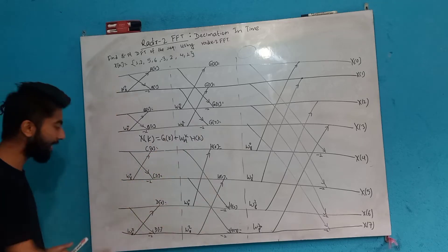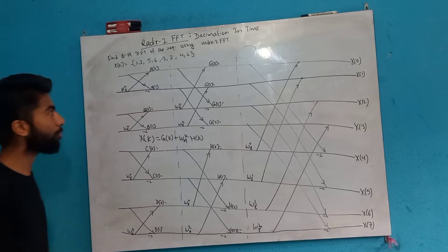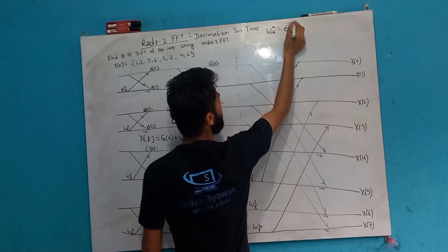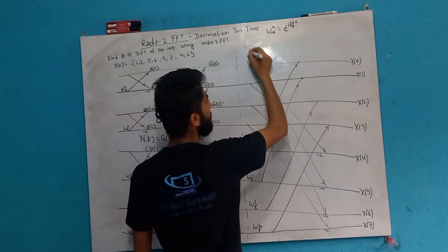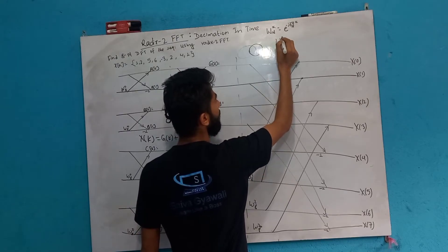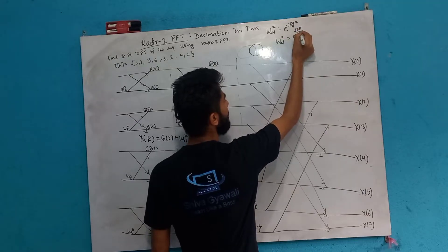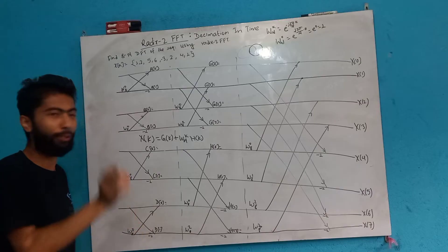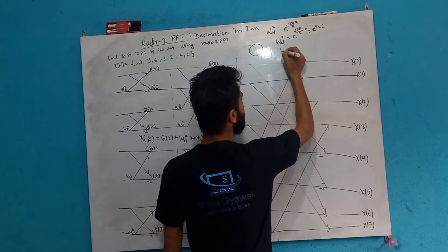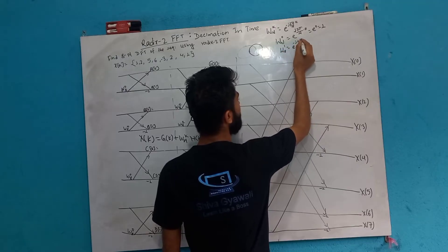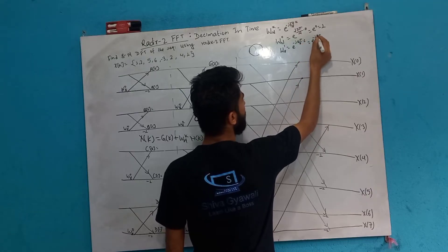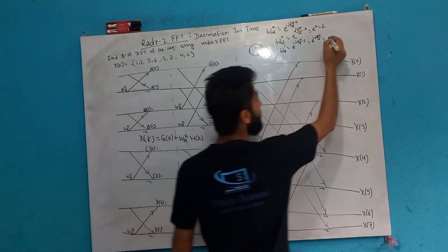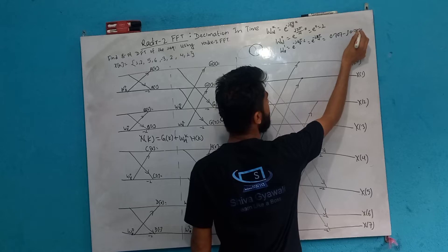If you want to do this, you will need to be able to get the reverse order in the input. What do you want to do? e to the power minus j 2 pi k by N. This is the trick. W is equal to 0: e to the power minus j 2 pi by 1 into 0. So e to the power 0 is equal to 1. W8^0 is equal to 1. W8^1: e to the power minus j 2 pi by 4, which is minus j pi by 4. So cos(pi/4) minus j sin(pi/4) equals 0.707 minus j 0.707. This is cos 45.